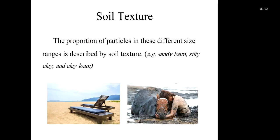Soil mineral particles are not the same size - they have different sizes: sand, silt, and clay. The proportion of particles in these different size ranges is described by soil texture. If the proportions are different, then the soil texture will be different. The soil texture can be named sandy loam, silt, or clay loam depending on the proportion of each size of particles. Soil texture is a very important physical property for soil and it affects the suitability of soil for most uses.